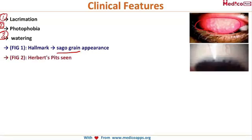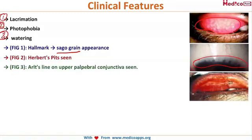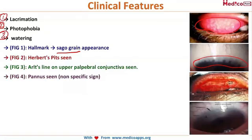Herbert's pits are seen over the corneal limbus. ALT's line is seen on the upper palpebral conjunctiva — that white line visible with the help of the arrow. You can also see a pannus.